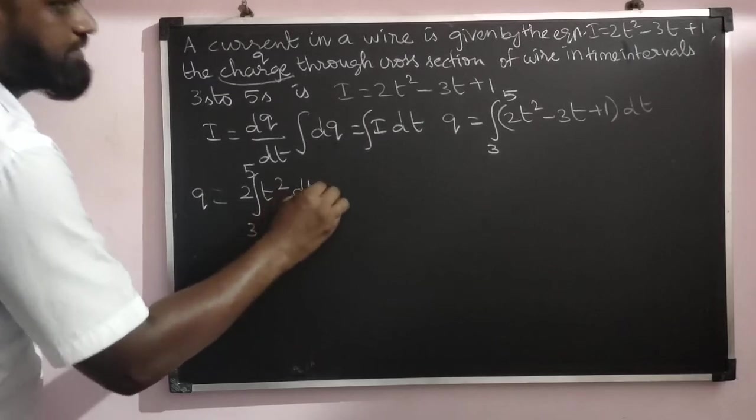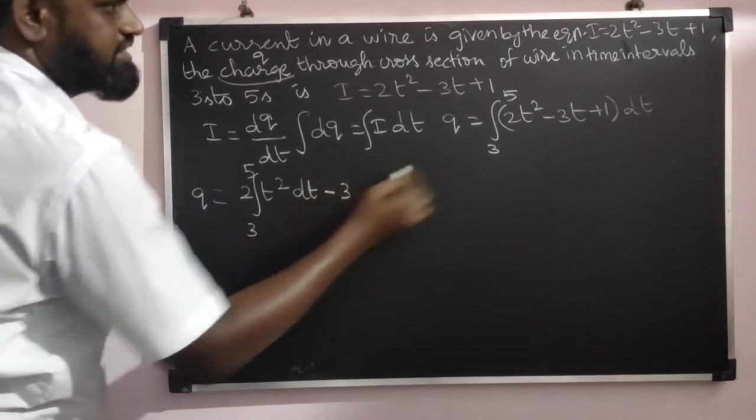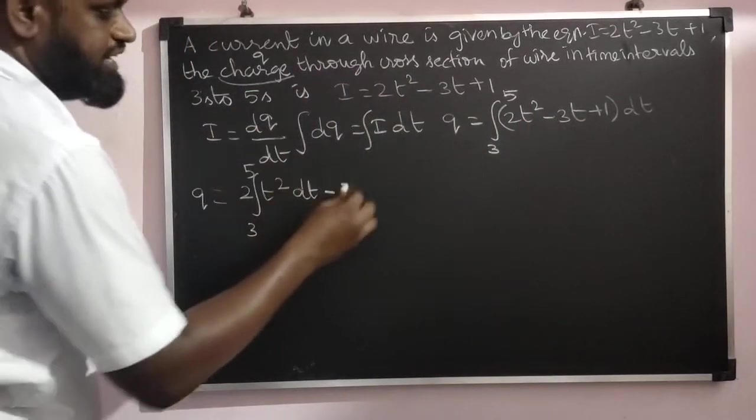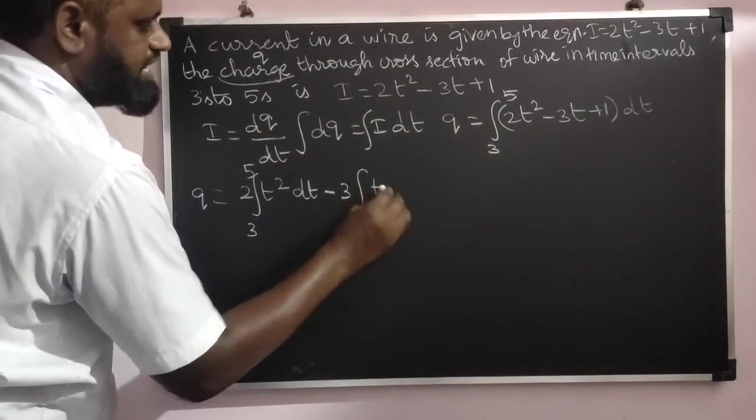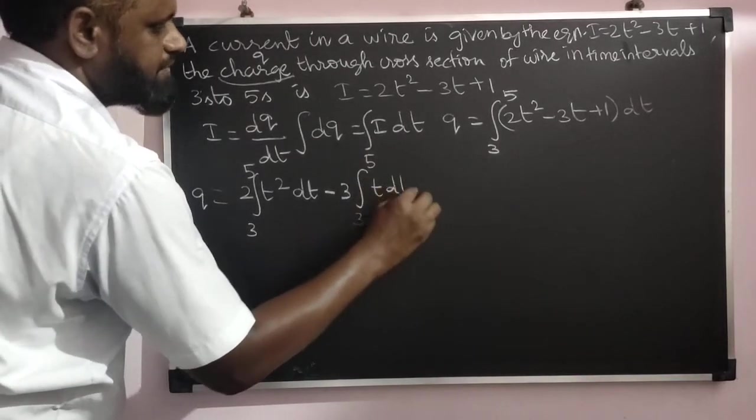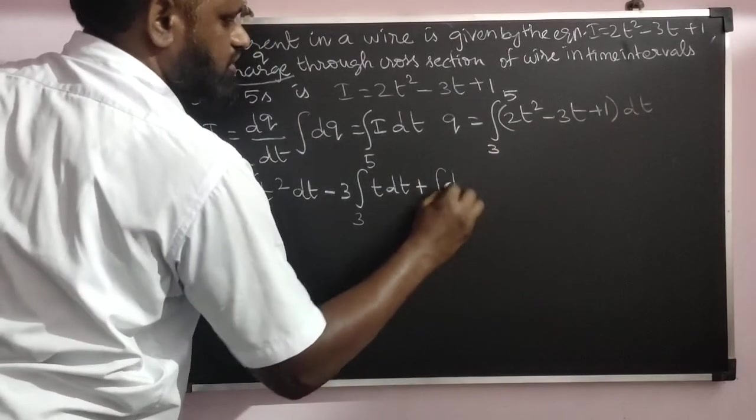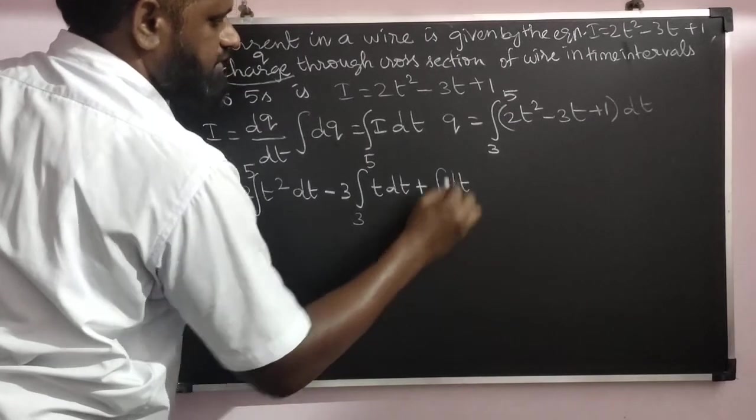dt is common for every term. Minus 3∫t dt from 3 to 5 (3 is a constant, that's why taken outside the integration) plus ∫dt from 3 to 5.